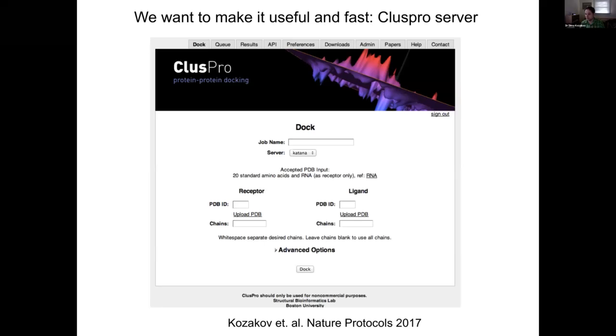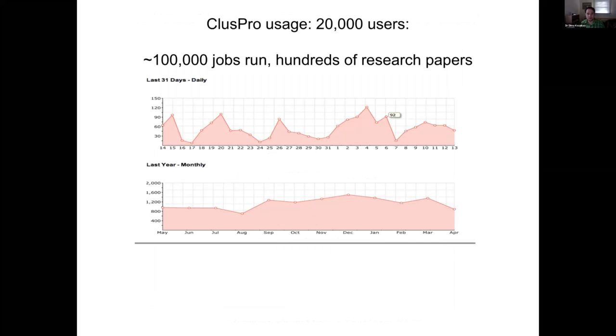We do this not just for our own group—we give out the program, but also we provide people with a server because it's actually pretty easy to use. You provide here, in the simplest form, two structures and press dock, and it does initial docking of two protein models. But if you have more information, we have a more advanced mode which I will talk more about, which provides additional things that you can do. The detailed description is also provided in the publication. The server is actually pretty heavily used. It has around 20,000 users, more than 100,000 jobs run just in the last year.